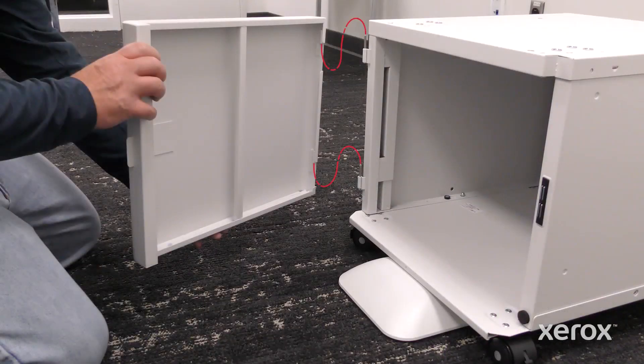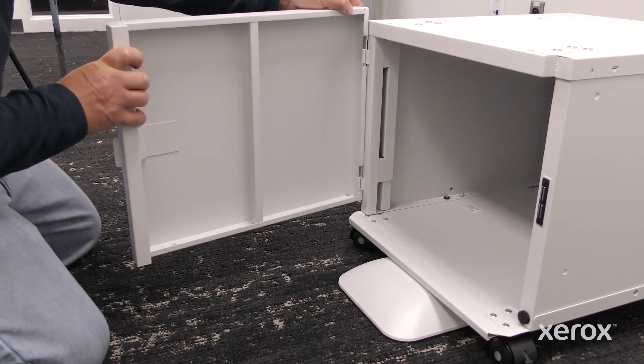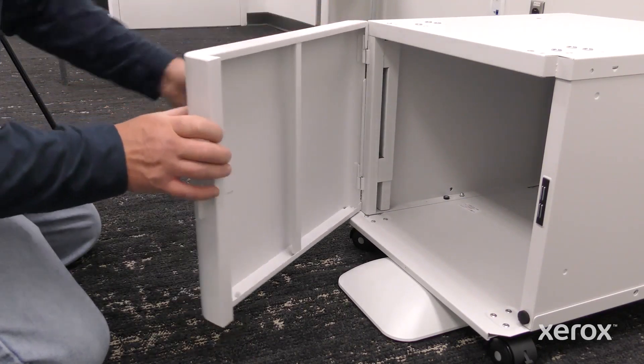To install the front door into the printer stand, align the hinge pins with the door frame and slide the door down. Then close the door.